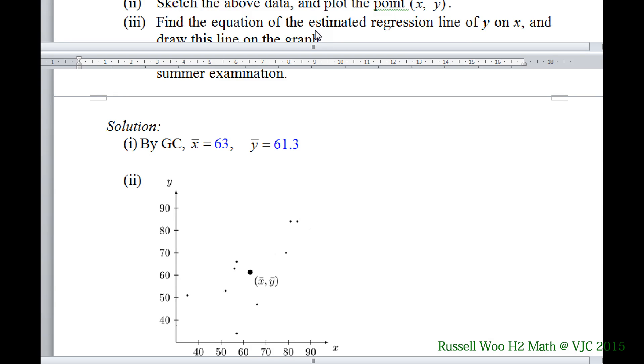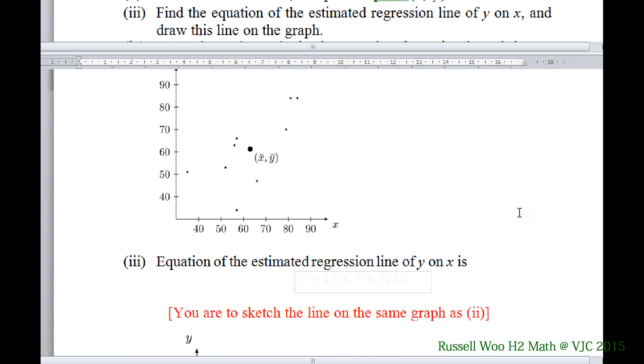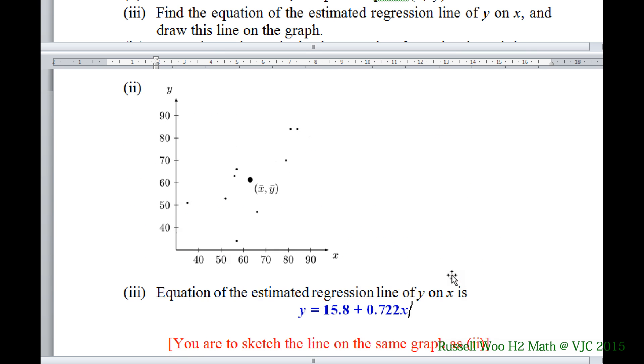If this talking goes on I not only cannot show video but I have to release your details. Part three, find the equation of the estimated regression line of Y on X. So the question very specific Y on X, we just do Y on X. So if you keep your GC, your regression line should look like this, is the BSM figure.